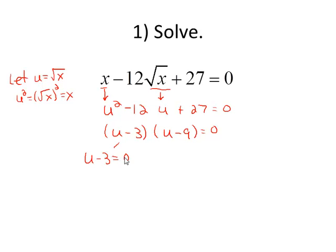So if u minus 3 equals 0, we know that u is equal to 3. Or if u minus 9 is equal to 0, we know that u is equal to 9.